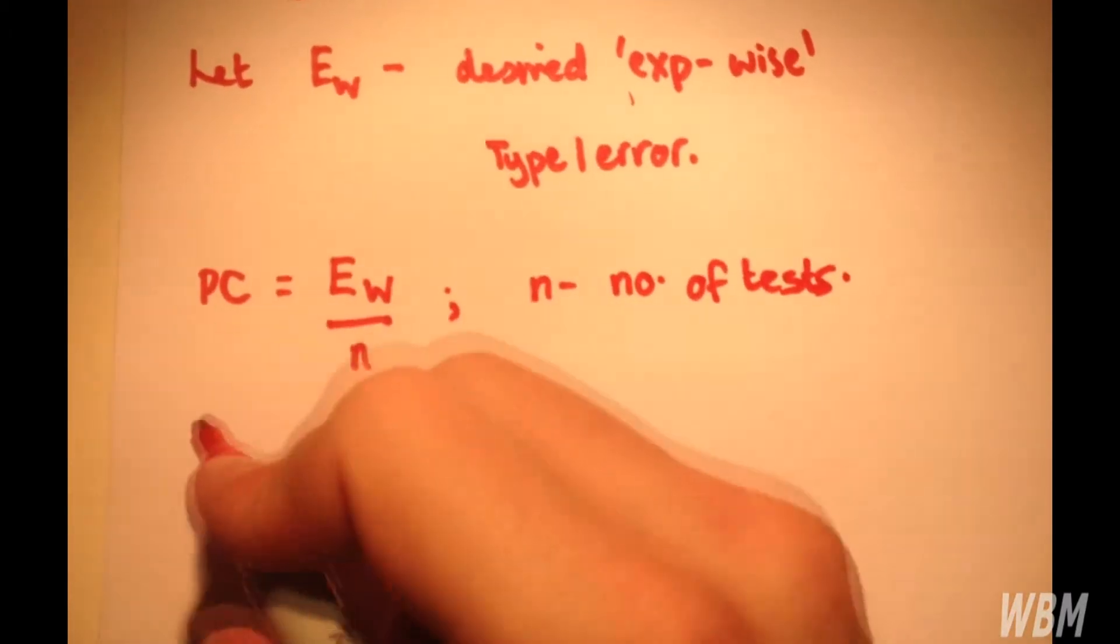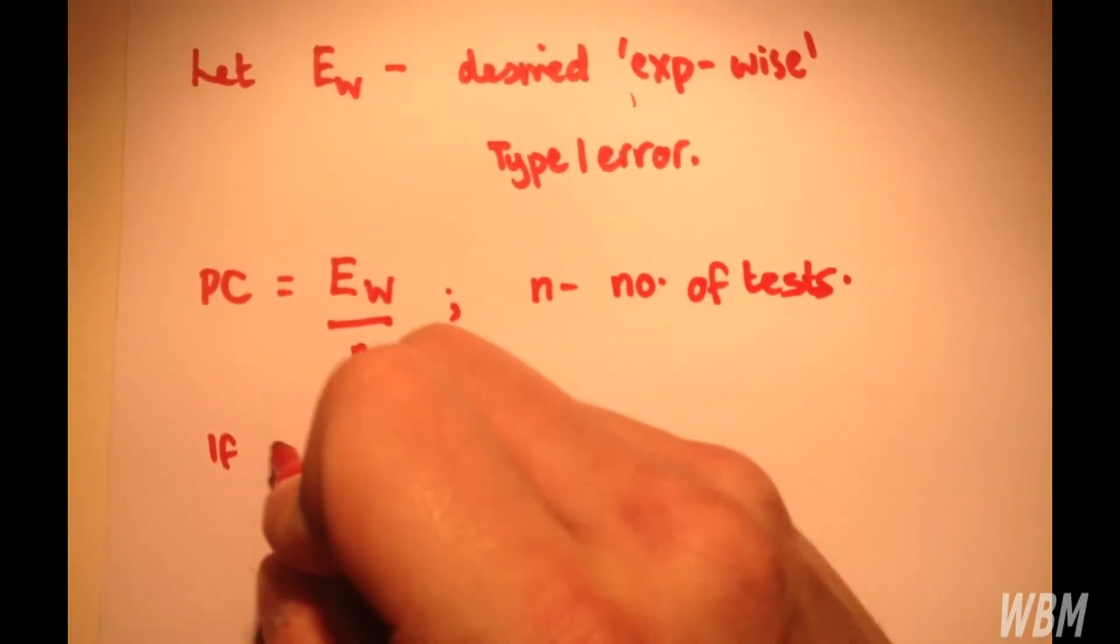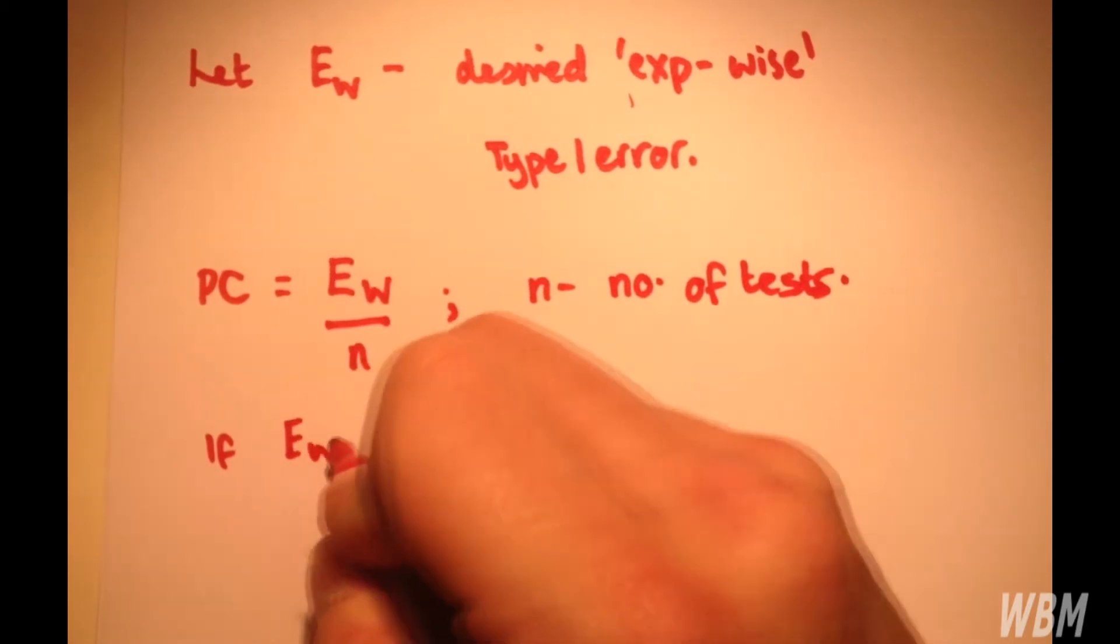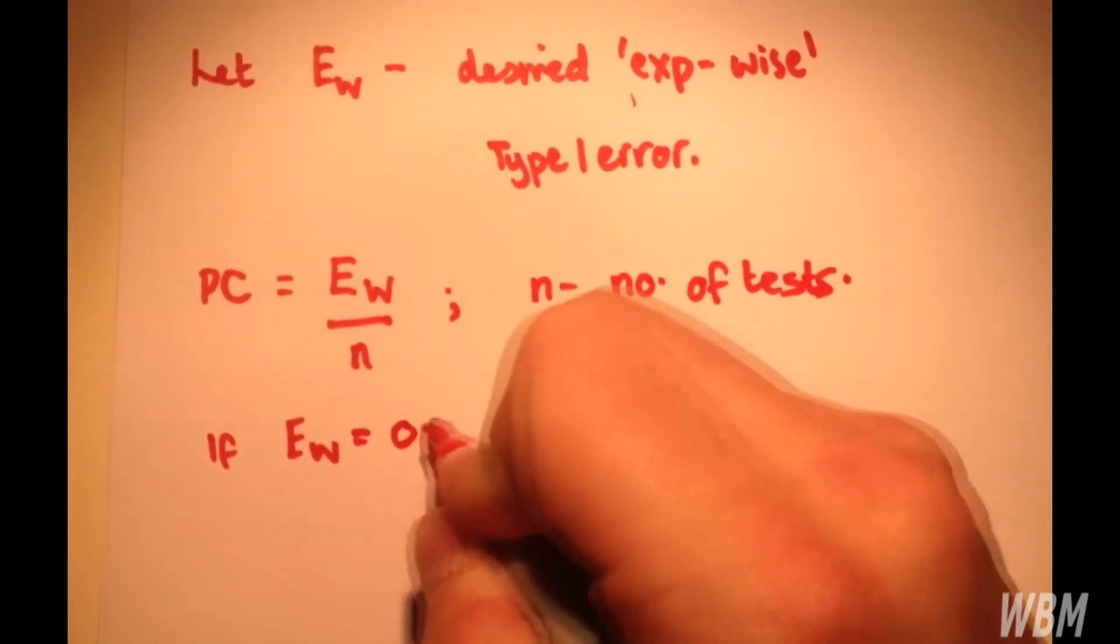So, as I said before, if we desire experiment-wise value 0.05,